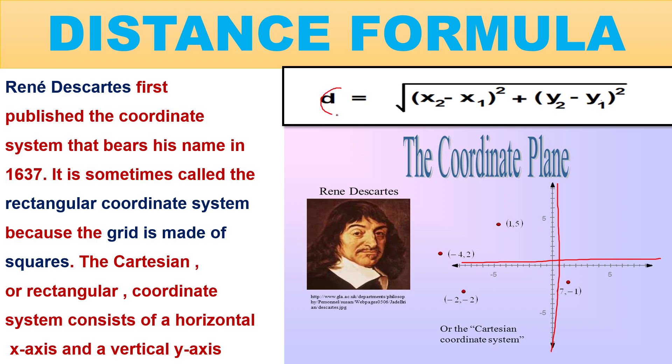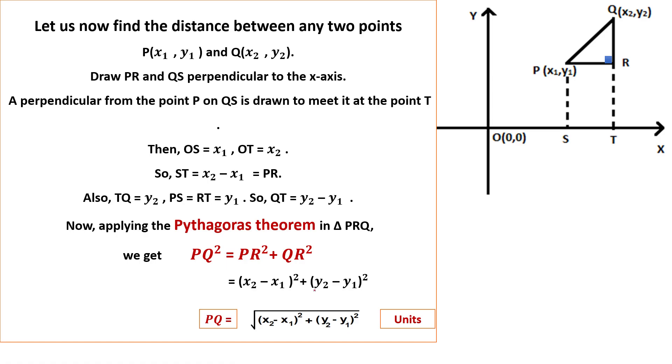Now we are going to prove that the distance formula: root of (x2 minus x1) whole square plus (y2 minus y1) whole square. And this is the picture of René Descartes. So let us start now.